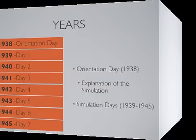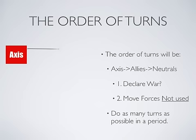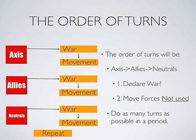The order of turns will be axis, then allies, then neutrals. The first thing you do is war — use movement to attack countries or navies. In non-war, that's movement to move things that were not involved in war and were not used during the war phase. We will have as many turns as we can get in the period during the day and we will always start where we left off.